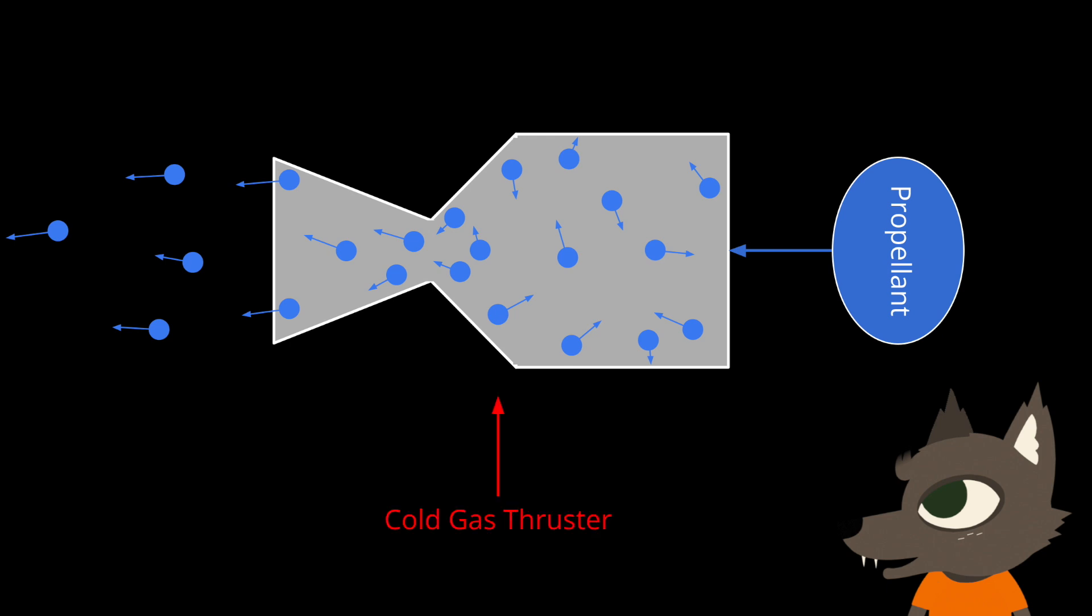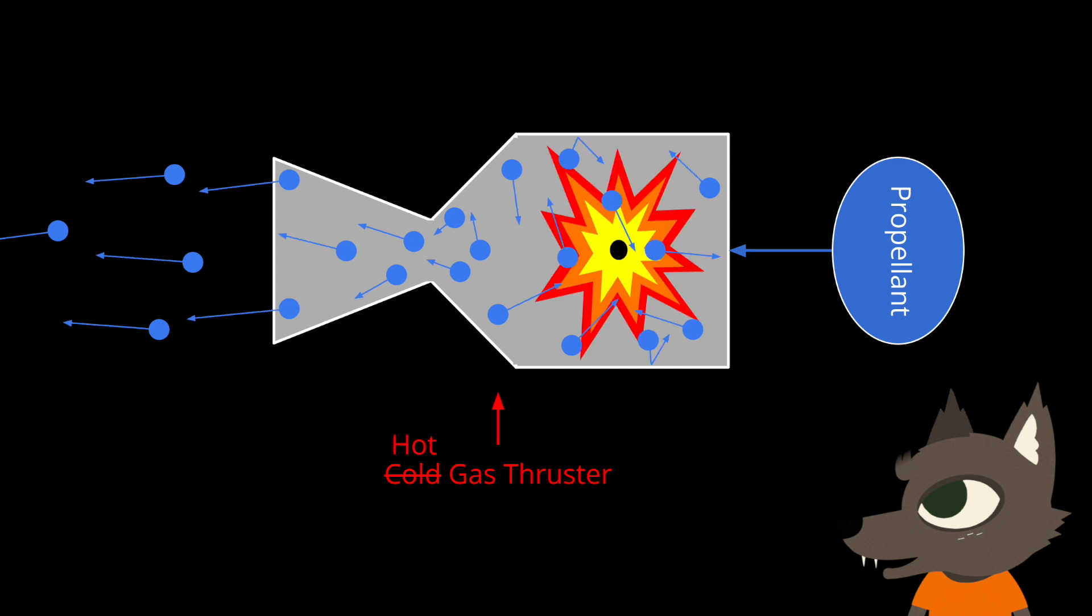This device is called a cold gas thruster, which is very simple but can only reach relatively low exhaust velocities of around 1 kilometer per second, or 11 football fields per second in imperial units. Chemical rocket engines improve on this by first burning the propellant, which heats it up before it flows through the nozzle.